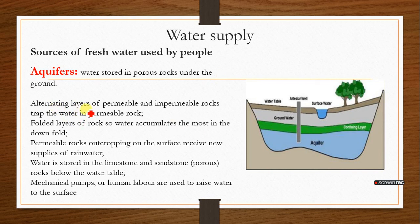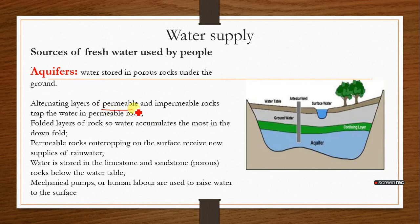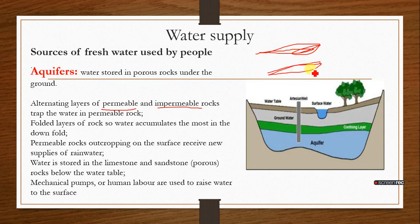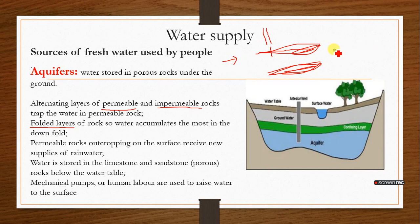When you have alternating layers of permeable and impermeable rocks, we trap the water in the permeable rock. With folded layers of rocks, water accumulates the most in the down-fold. Permeable layers are layers that allow water to pass through them; impermeable layers are layers that don't allow water to pass through. As rainwater falls, it percolates through the permeable layer but cannot pass through the impermeable layer.